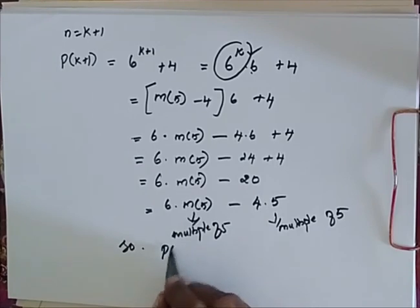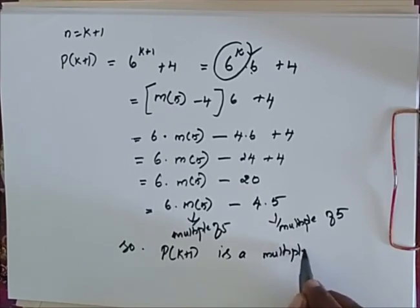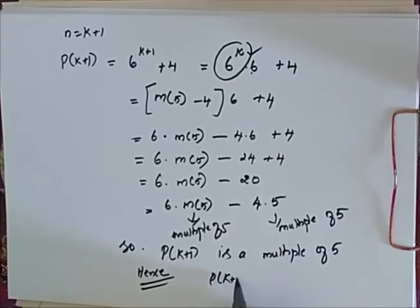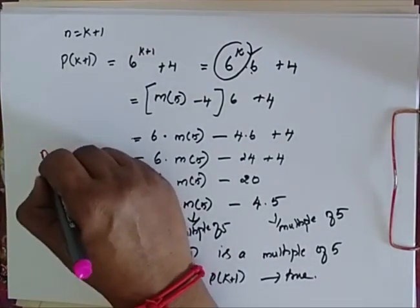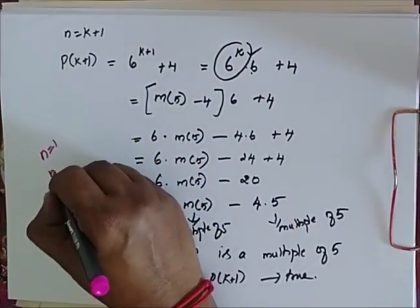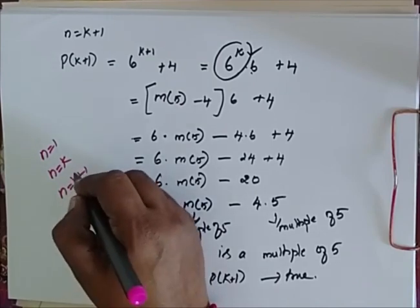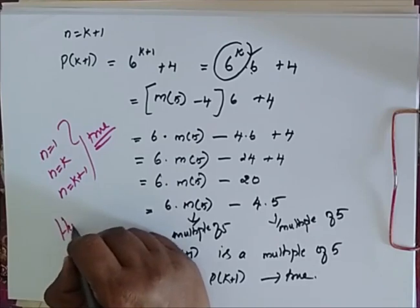So now I can conclude that P of k plus 1 is a multiple of 5, and hence I have reached the proof that it is true for P of k plus 1. I have proved for n is equal to 1, I have proved for n is equal to k, and I have proved for n is equal to k plus 1 that it is true. Hence, we have proved.